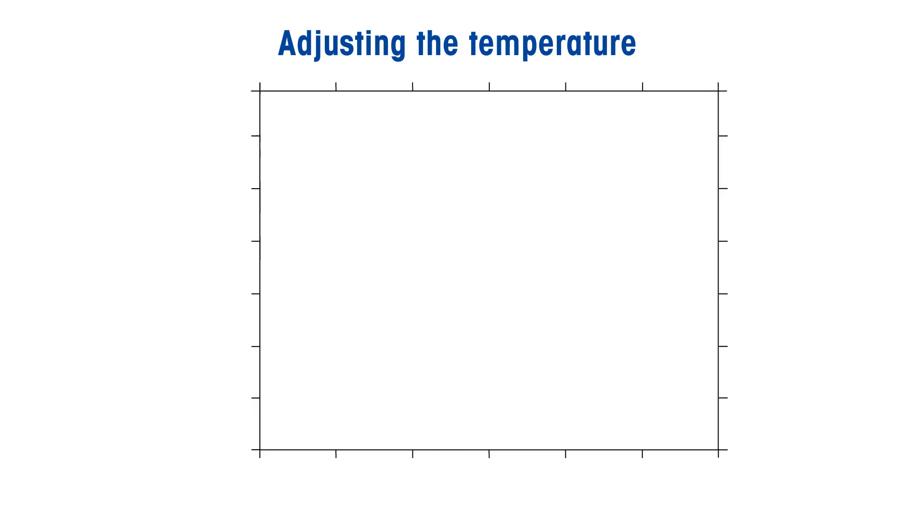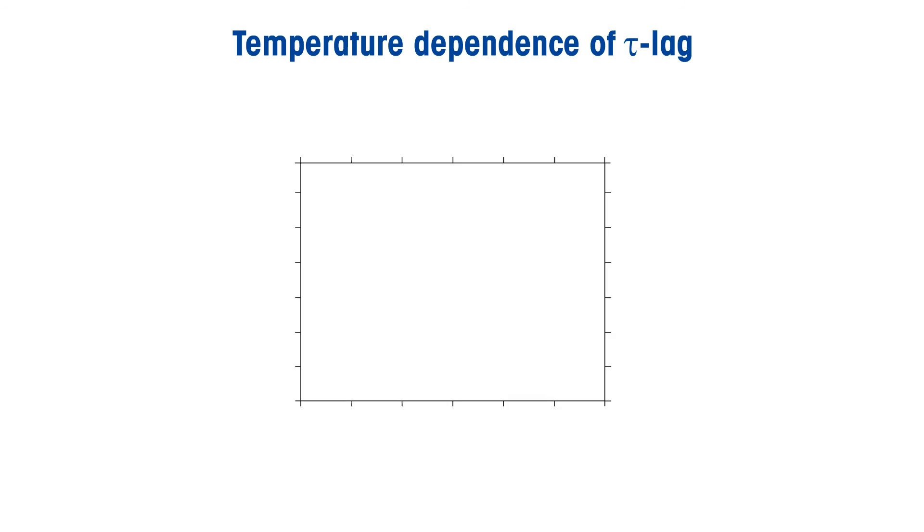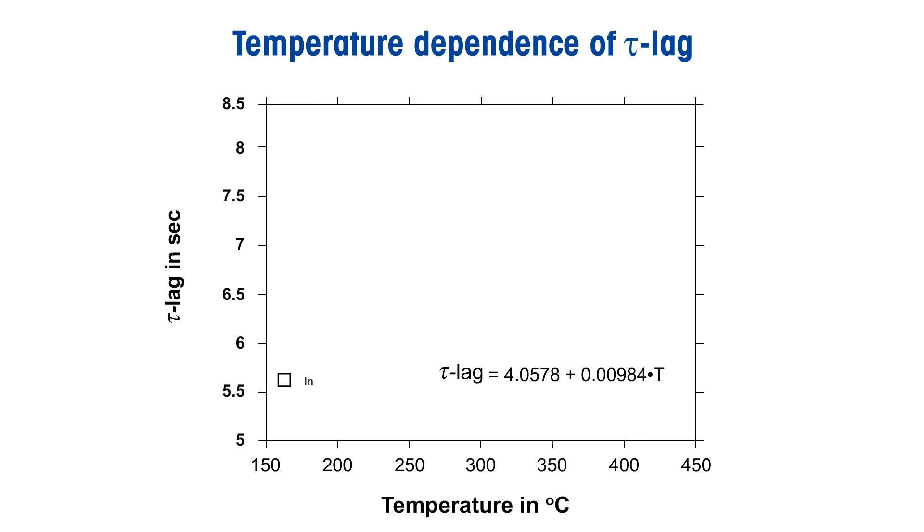This can be corrected with the tau lag adjustment. The STAR-E software allows you to run a special adjustment method that takes care of different heating rates. These additional parameters are stored together with the crucible and gas type in the database.